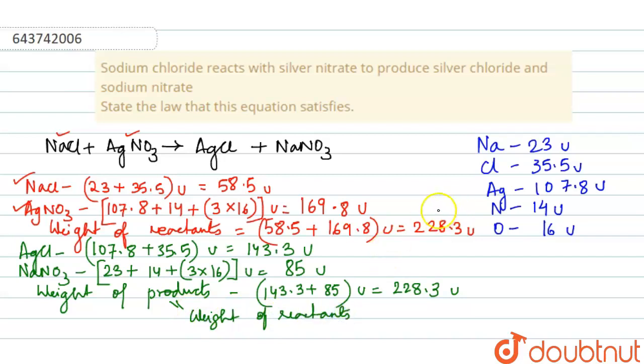Thus we can say that mass is conserved, because we get same mass in both sides of the reaction. So the law that the equation satisfies is the law of conservation of mass. This is your complete answer. Thank you.